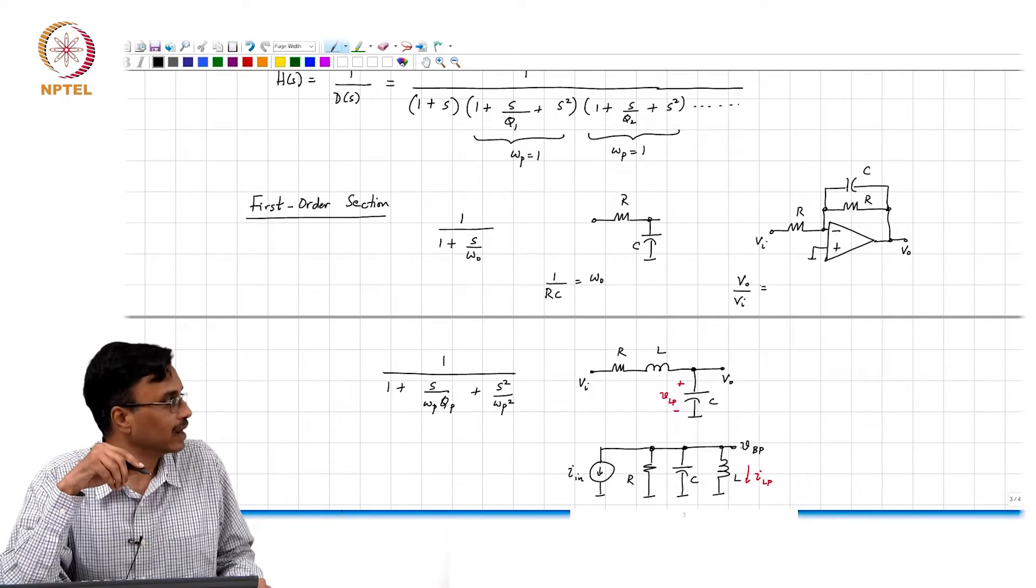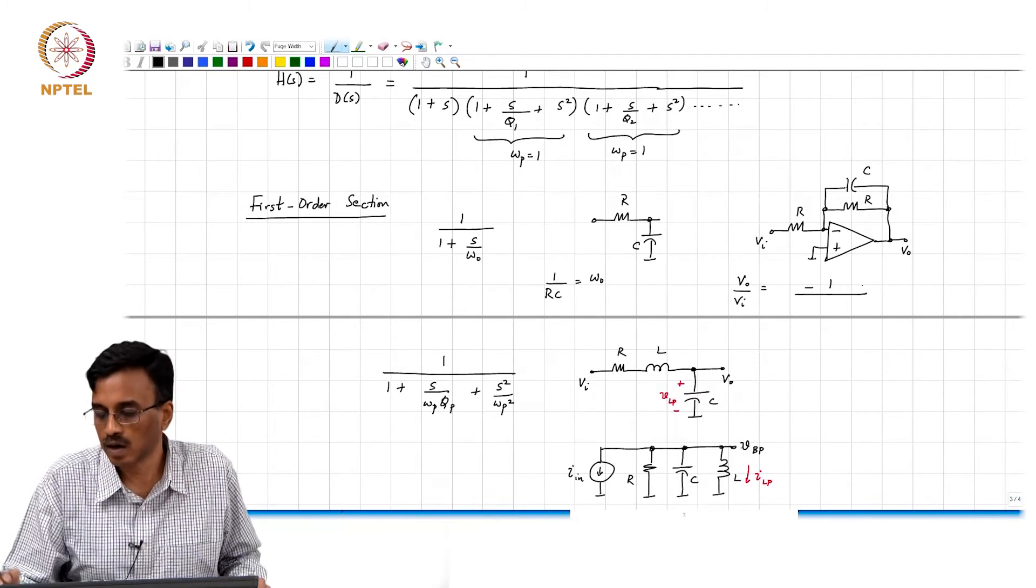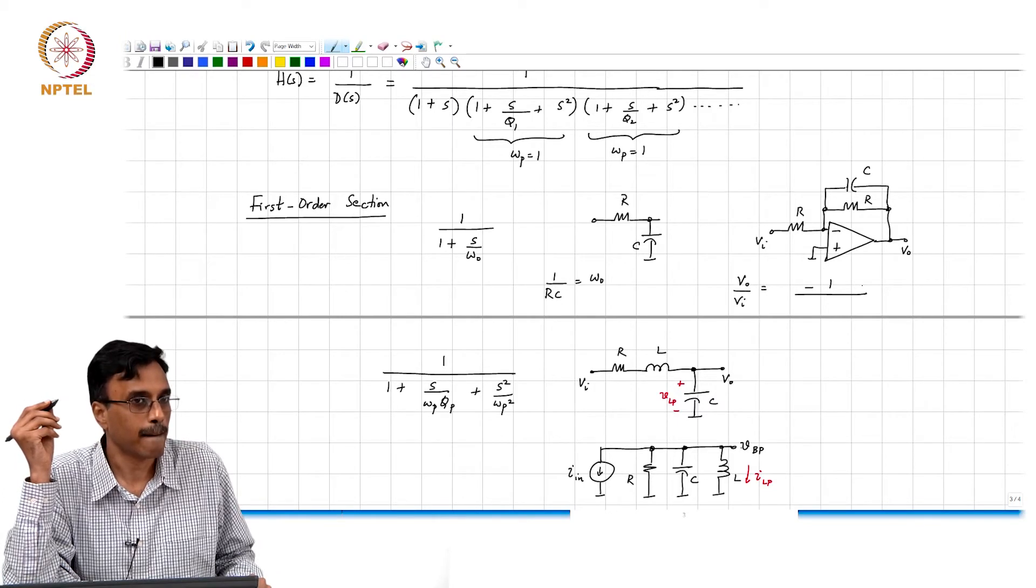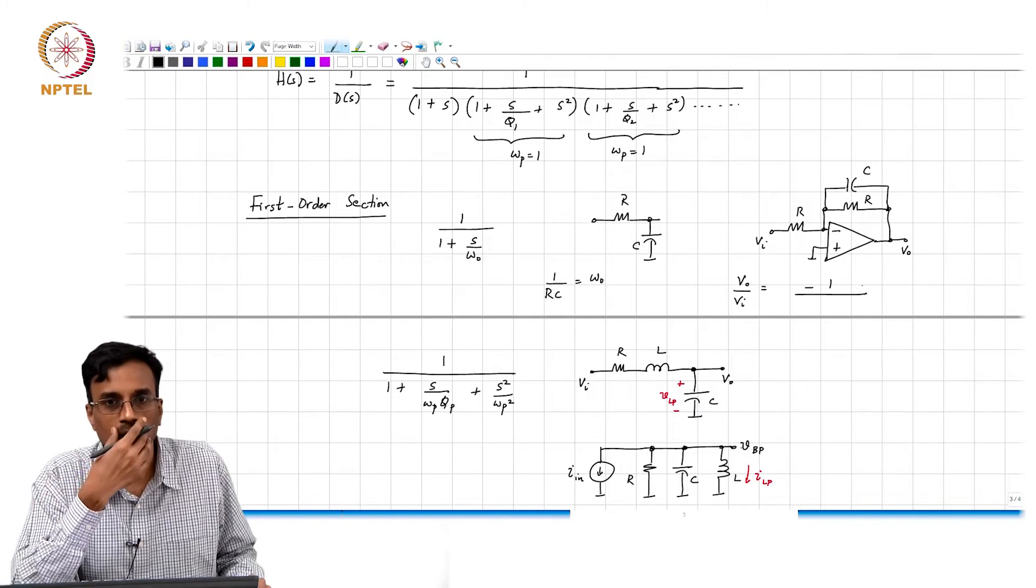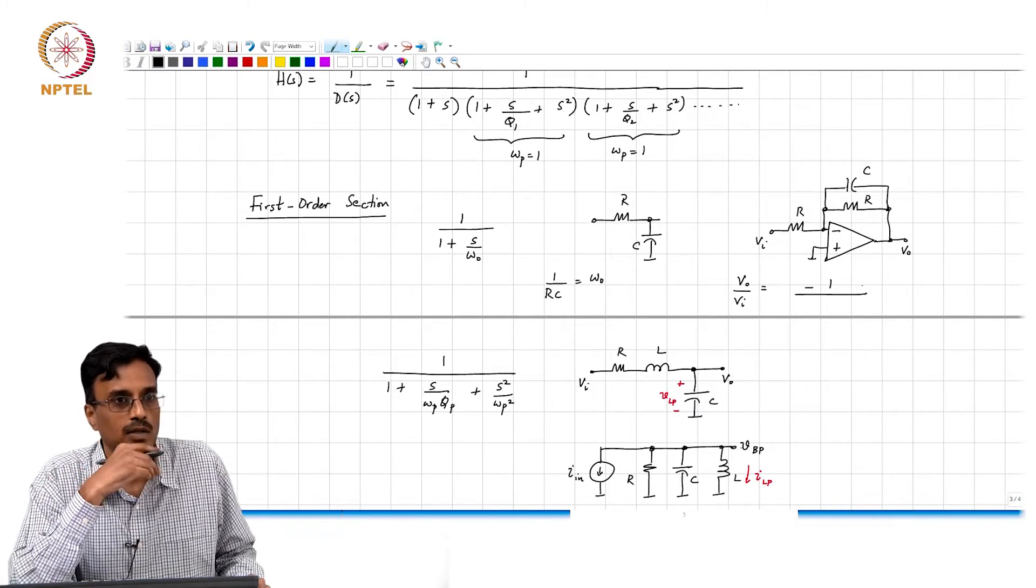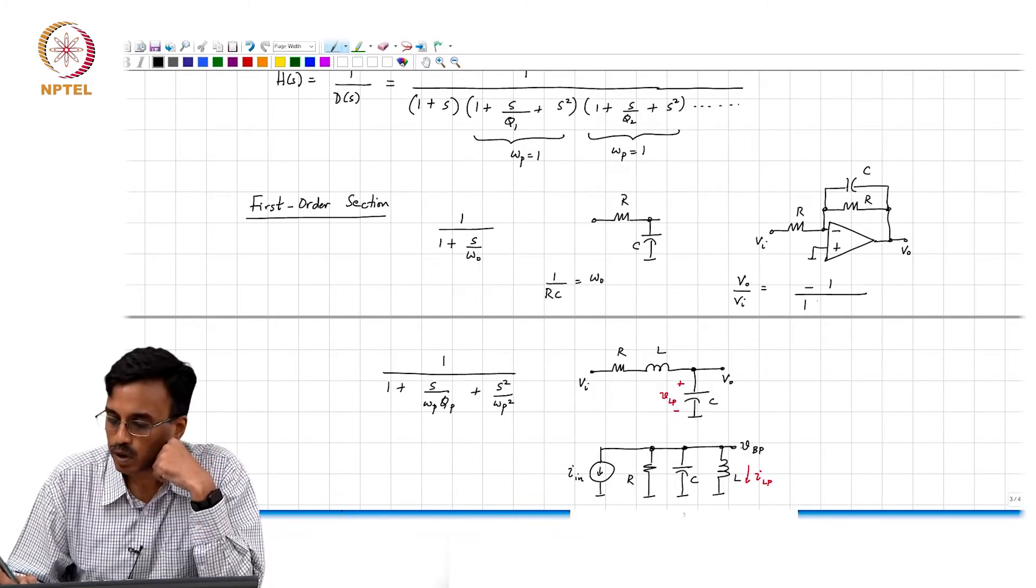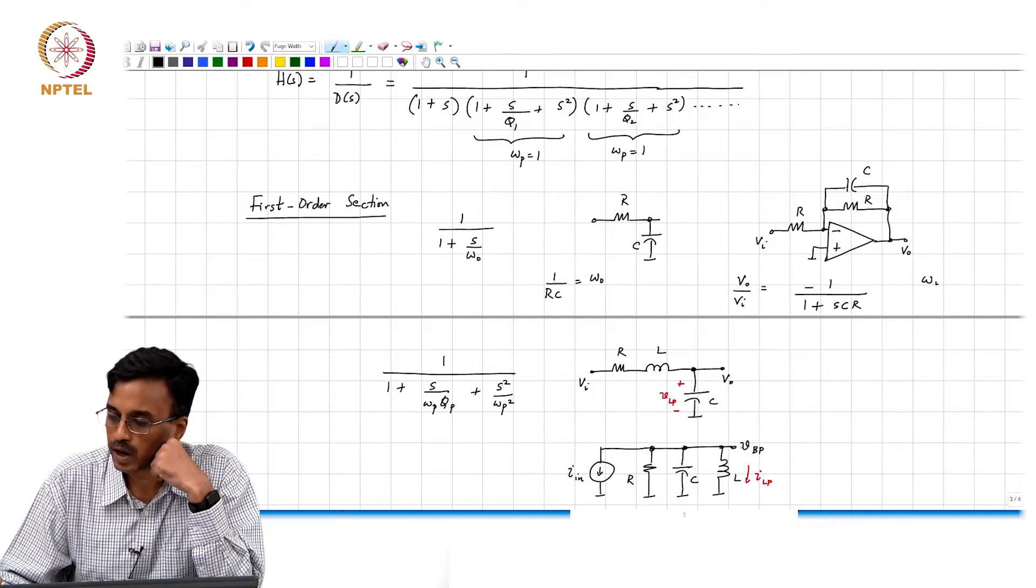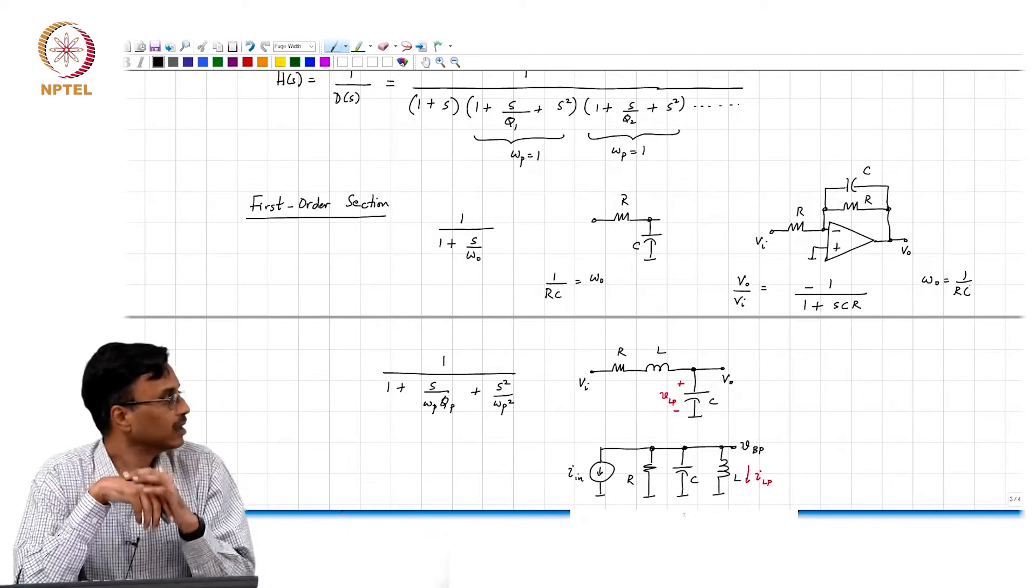What is V_o by V_i? What is the DC gain? Minus 1. And what is the denominator? Please evaluate the transfer function. Yes? 1 over (1 + sCR). And therefore, omega_naught is 1 over RC, straightforward.